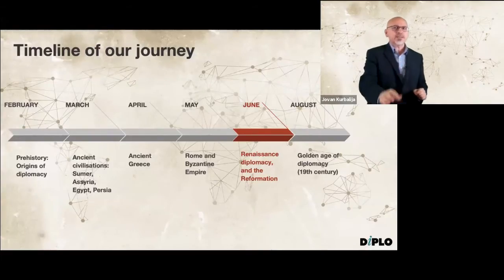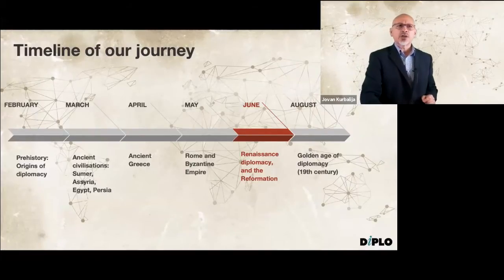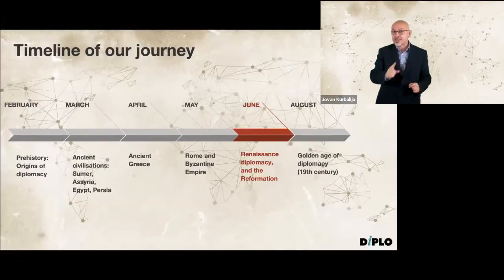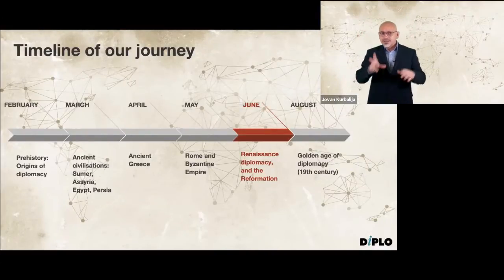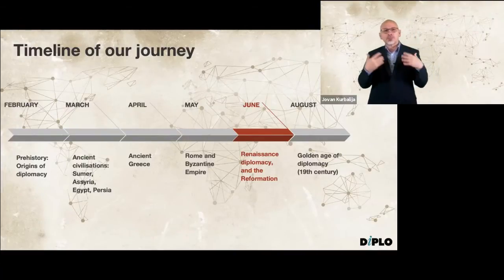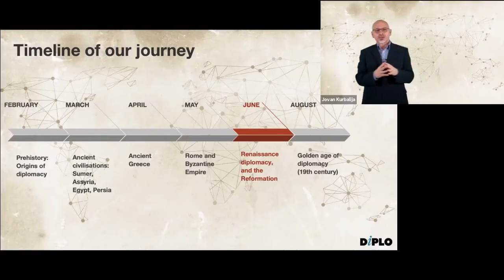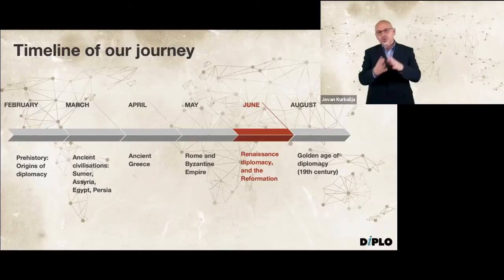It was the Byzantine who taught diplomacy to Venice, and it was the Venetians who set the patterns for the Italian cities, for France and Spain, eventually for all Europe. And this is exactly one important message from our historical journey: the message of continuity in the core functions of diplomacy and changes in the way diplomacy is performed. From smoke signals to the Internet, the core function of diplomacy remained the same.